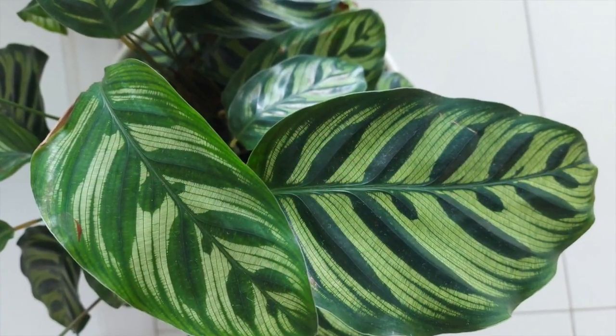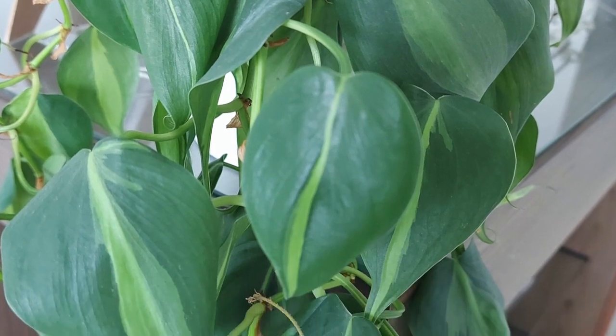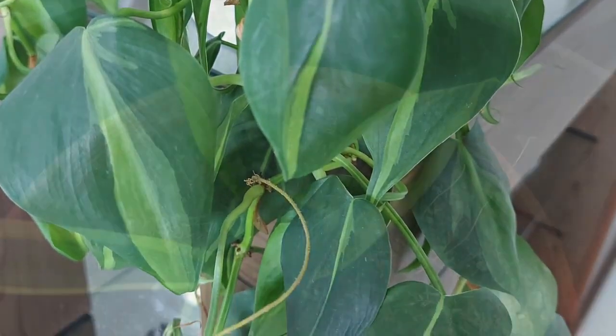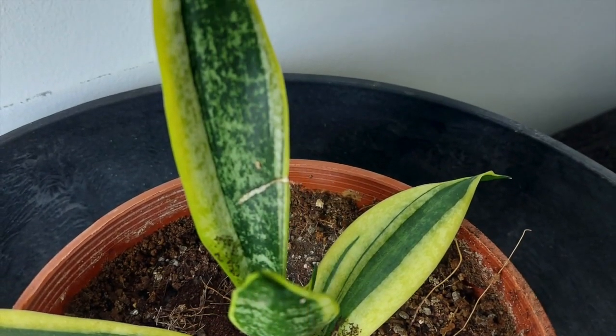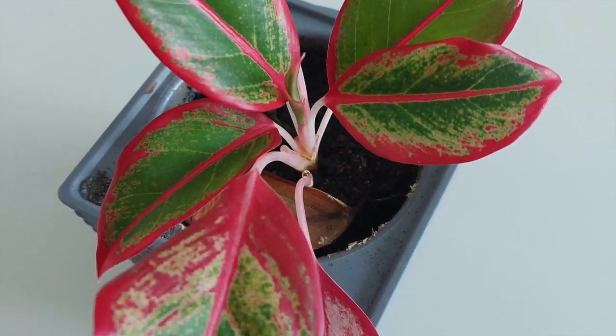Have you ever noticed all of the wonderful patterns you can find on leaves? Leaves are all different shapes and sizes and colors. And if you look really carefully, you'll see some small lines on each leaf. They're called the veins.